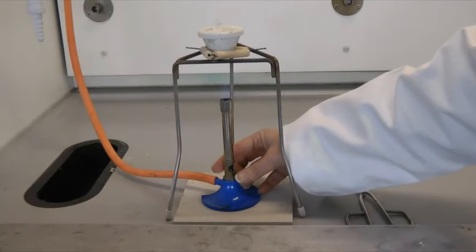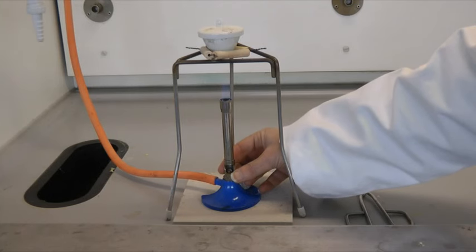The Bunsen should be started on a low flame with the airhole half open. The airhole can then be fully opened very slowly.